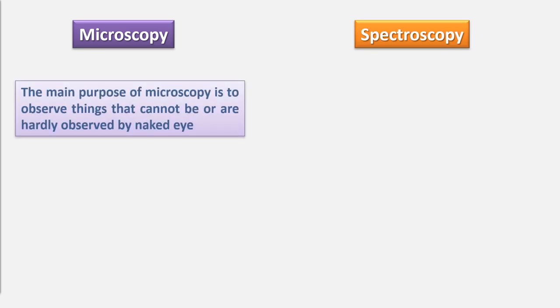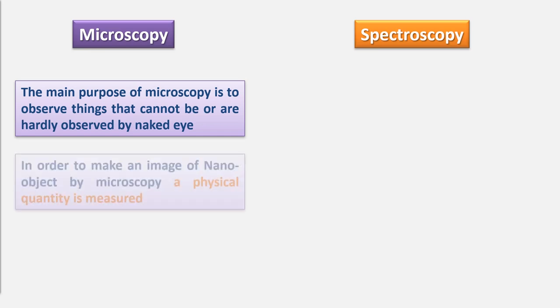The main purpose of microscopy is to observe things that cannot be, or can hardly be, observed by naked eyes. Overall, it's more about seeing nanos with more details. In order to make an image of a nano object, we can measure the variation of a physical quantity like interaction forces or induced current amount.